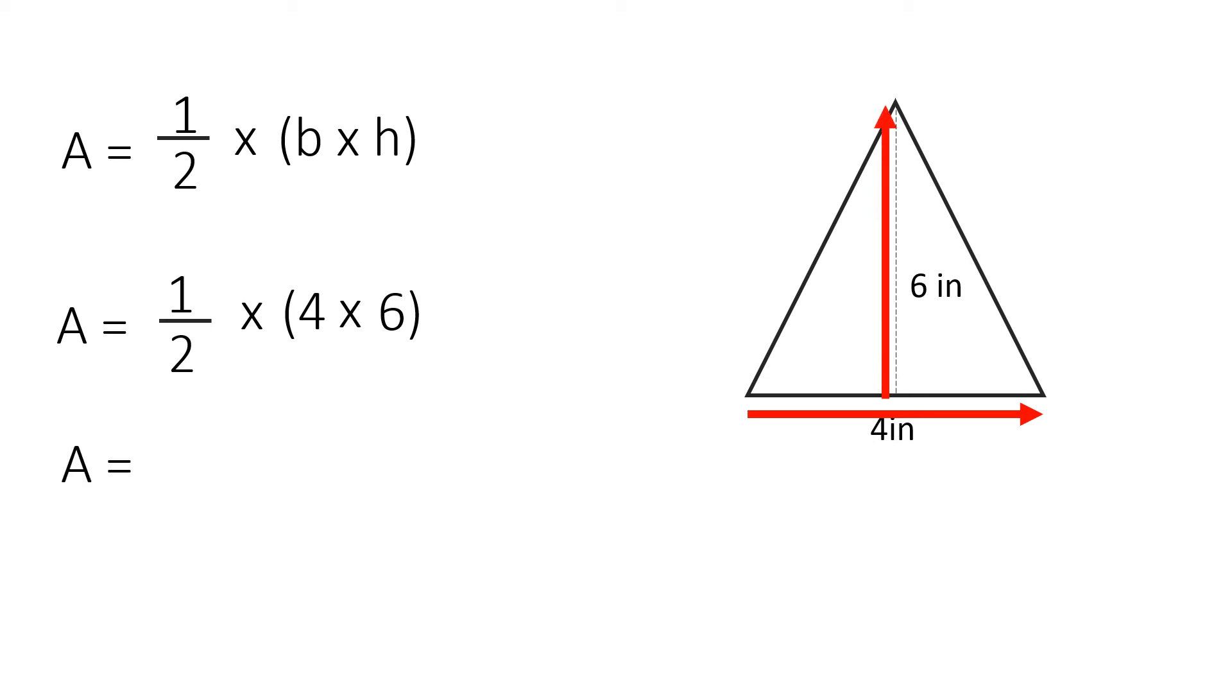We write it again: area equals one-half times four times six, which is 24. Half of 24 is 12 inches squared. This is how you should write out the formula.